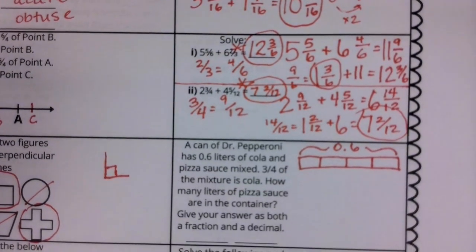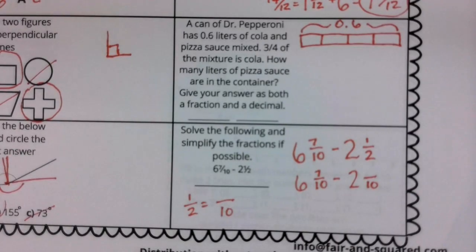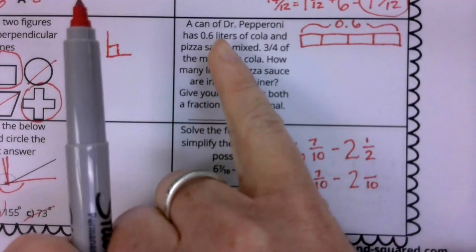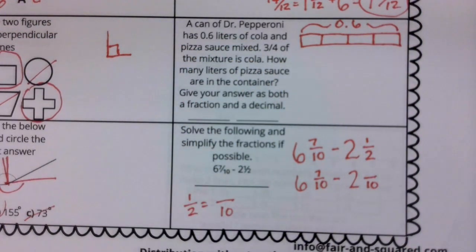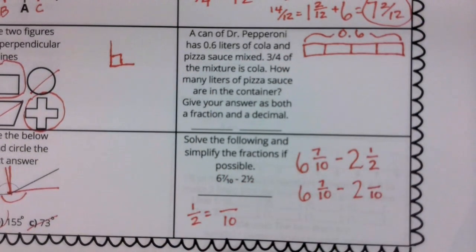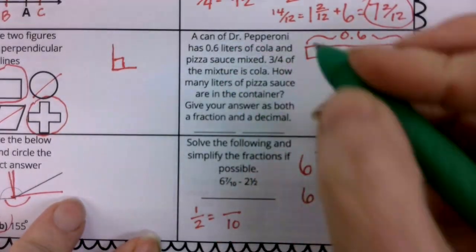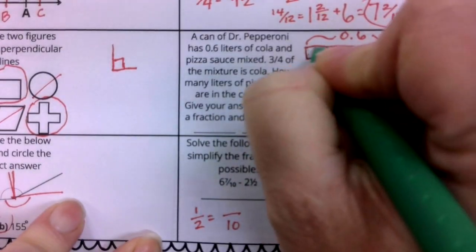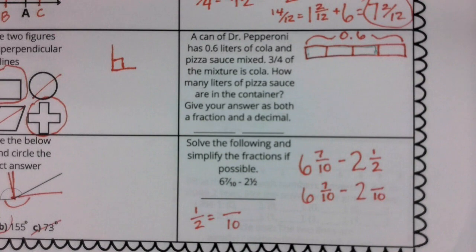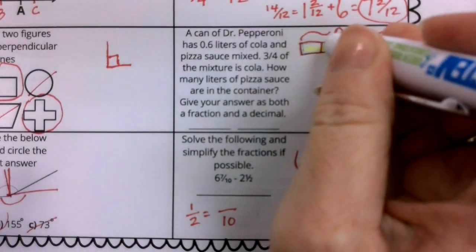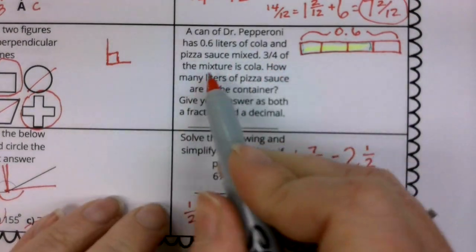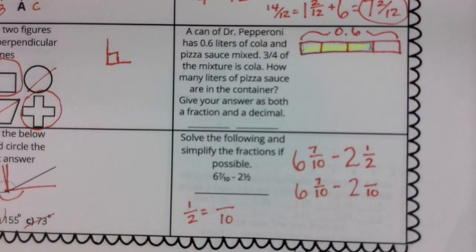Oh, boys and girls, there's a lot of fractions in this Tuesday. We're going to take a quick break from fractions here when we think about this very interesting can. This says a can of Dr. Pepperoni has 0.6 liters of cola and pizza sauce mixed. 3 fourths of the mixture is cola. How many liters of pizza sauce are in the container? Give your answer in both a fraction and a decimal. Now, my mind tends to think of these things like tape diagrams. This entire part is our 6 tenths, and that's how many liters the entire can is. Now, this much of it, of course, my pen is not going to work for me, but that's okay. Let's take a look here. This entire portion there, because it said 3 fourths, is cola. This part is going to be the pizza sauce. What a very interesting drink.